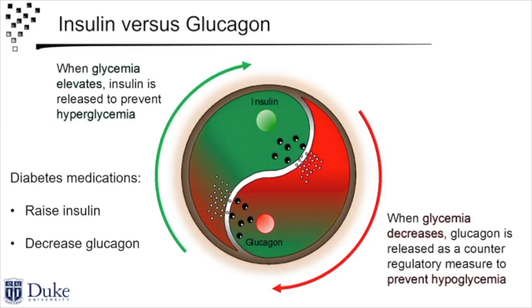This slide sets up the canonical dogma around the various effects of insulin and glucagon. When glucose goes up, beta cells secrete insulin to bring it back down. If glucose goes down, the alpha cells secrete glucagon to bring it back up. These have been positioned ever since glucagon was discovered as almost antagonistic against each other with respect to glucose control. Today I want to show you that maybe it's not that simple.